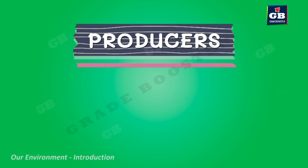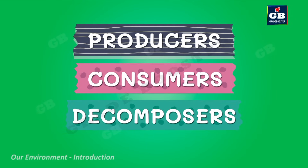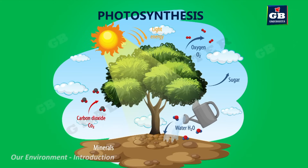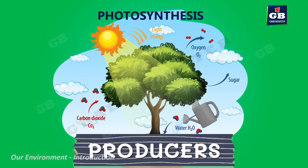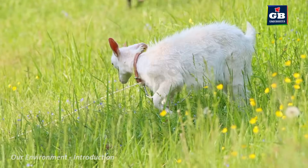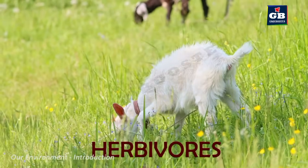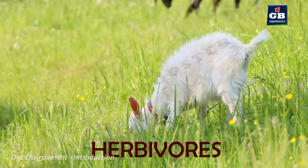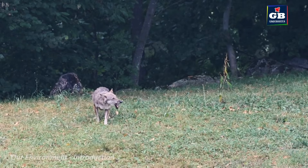The three types are producers, consumers, and decomposers. Green plants and some bacteria carry out a process called photosynthesis and prepare their own food — they are called producers. The animals that feed on plants are called herbivores.